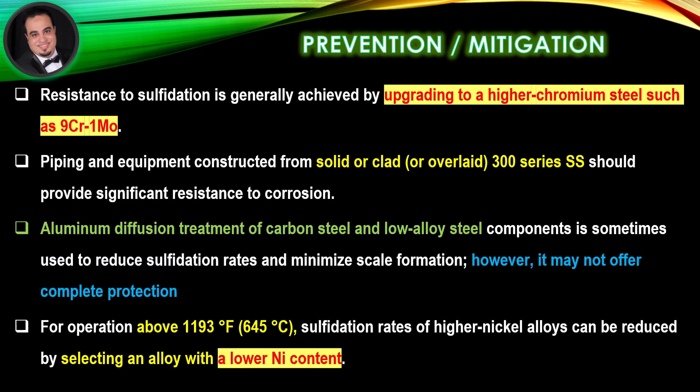Prevention and mitigation: Resistance to sulfidation is generally achieved by upgrading to a higher chromium steel, such as 9-chromium-1-molybdenum. Piping and equipment constructed from solid, clad, or overlaid 300-series stainless steel should provide significant resistance to corrosion. Aluminum diffusion treatment of carbon steel and low-alloy steel components is sometimes used to reduce sulfidation rates and minimize scale formation; however, it may not offer complete protection. For operation above 1193°F, sulfidation rates of higher nickel alloys can be reduced by selecting an alloy with a lower nickel content.